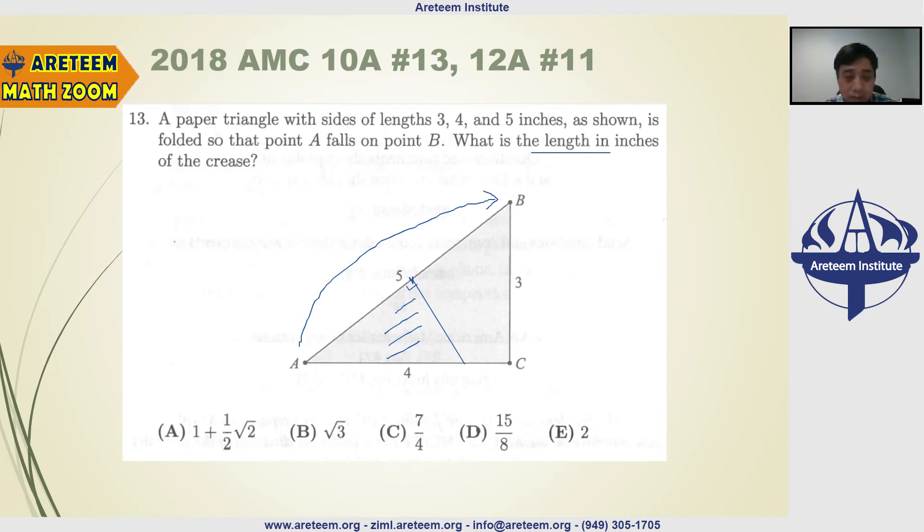So let's find out this half of AB is 5 over 2, 5 over 2. So then we have a ratio, right? We have two similar triangles, we have ratios, and then the ratio is like this.